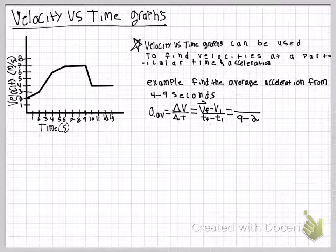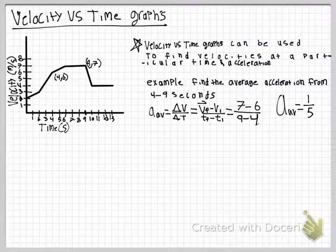You use the average acceleration equation, which is delta v over delta t, or final velocity minus initial velocity divided by final time minus initial time. This gives us 9 minus 4 for the time and 7 minus 6 for the velocity, as the points are 4,6 and 9,7.